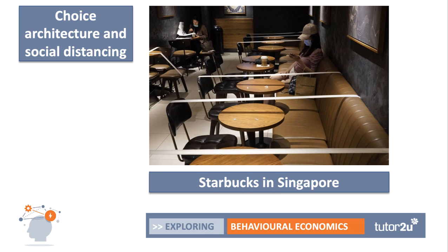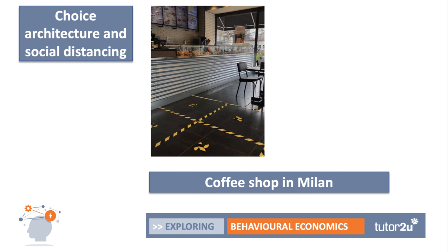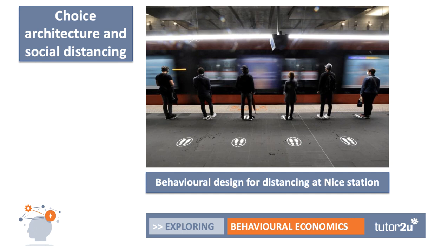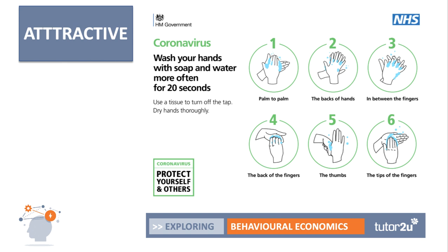In the wake of the pandemic, businesses and organizations have had to use choice architecture to make it easy for people to socially distance. Here's a Starbucks in Singapore, a coffee shop in Milan with a nice bit of choice architecture for where to stand, and Nice station in France — good examples of easy, fairly attractive, low-cost behavioral nudges. The UK government also tested lots of publicity material to encourage cleanliness and hygiene habits — simple messaging like 'wash your hands with soap and water for 20 seconds' and 'protect yourself and others' seems to have had an effect.